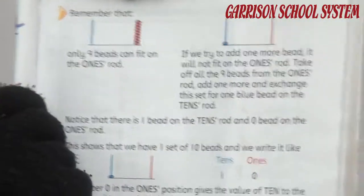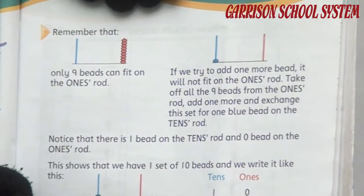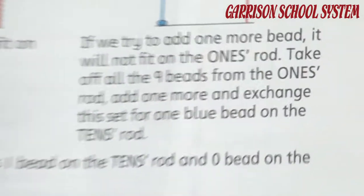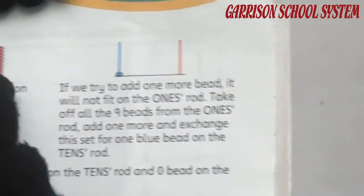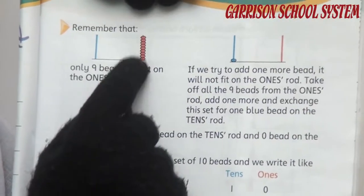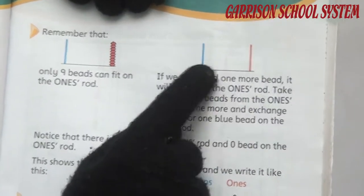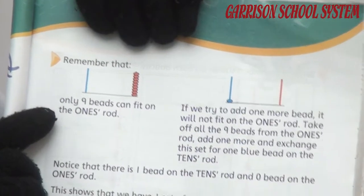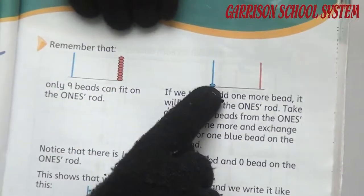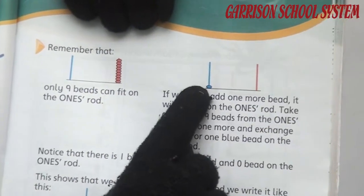Single numbers are called ones. When we put one more bead on ones, it does not fit. After that, what we do? We put one bead here on the blue rod. The one blue bead means it has the amount of ten. If we try to add one more bead, it will not fit on the ones rod. So we take off all nine beads from the ones rod, add one more, and exchange this set to one blue bead. So we have shifted — exchanged to one blue bead.